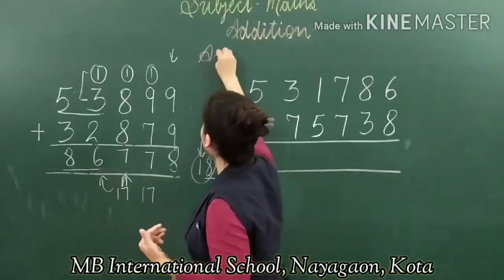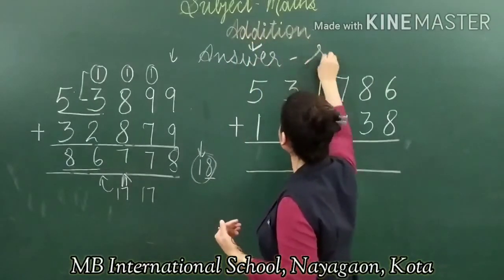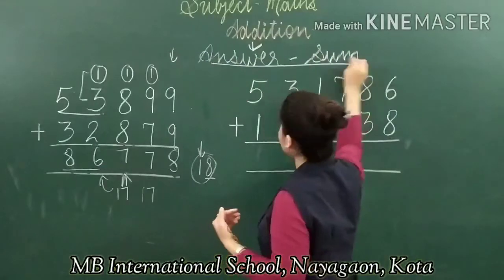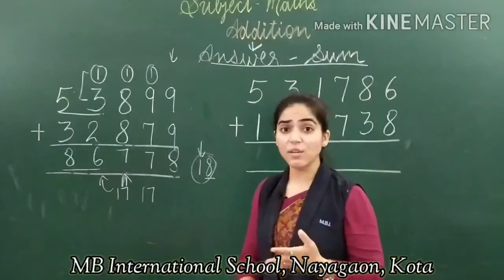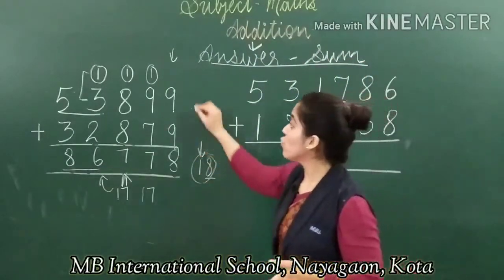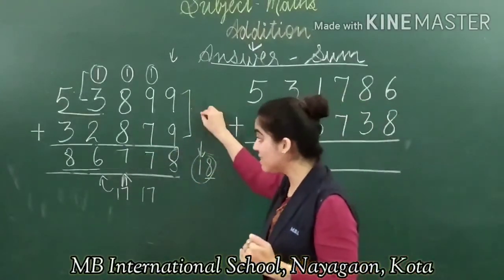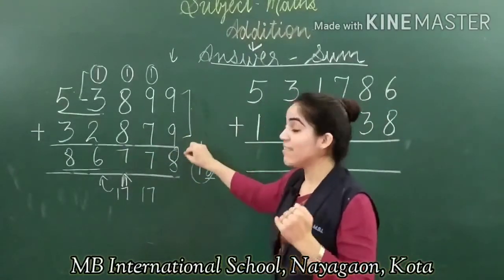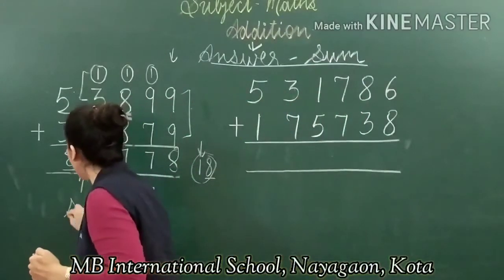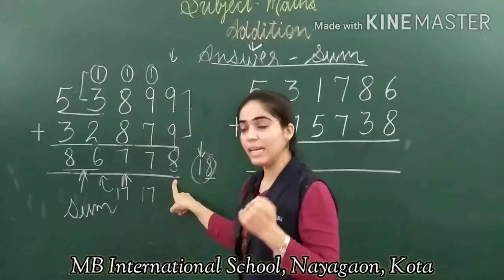The answer of addition is called the sum. The numbers we are adding are called addends, and the result we get is called the sum. So the sum we obtained is 86,778.